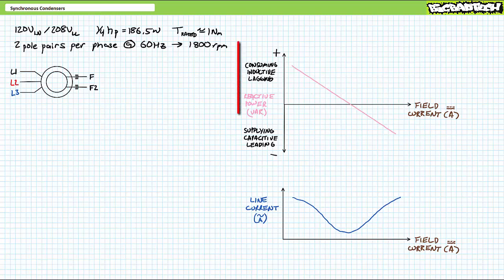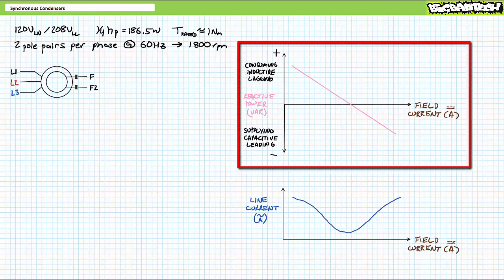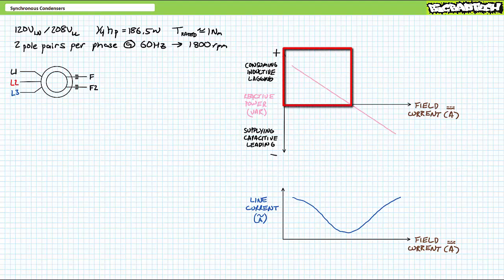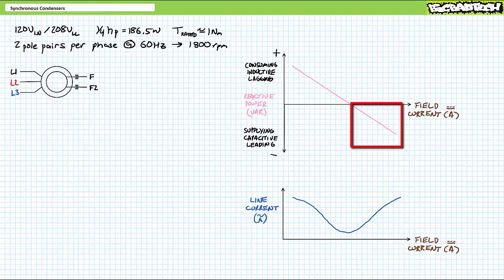In the aforementioned lecture, we learned that a graph of reactive power as a function of field current for an electrically excited synchronous motor looks something like this. At low levels of rotor excitation, the synchronous motor draws positive reactive power and appears as an inductive load where current lags voltage. If field current increases, it draws less reactive power and the phase shift between voltage and current decreases. If field current is further increased, the synchronous motor switches roles and instead supplies negative reactive power and appears as a capacitive load where current leads voltage.